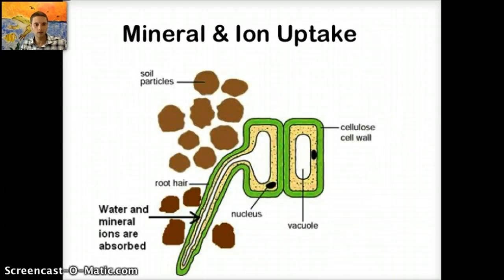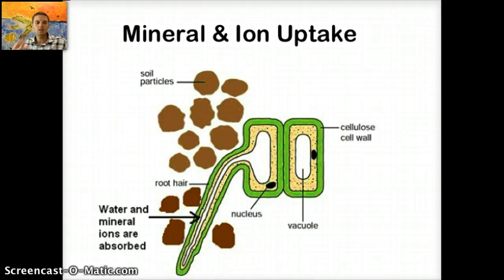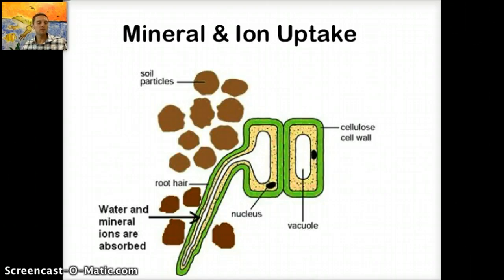Here we can see soil particles, a root hair, and individual cells. The concentration of minerals and ions within the root hair is actually higher than in the soil — it can often be 100 times greater inside the root tissue than in the soil. This is established by active transport, so the plant spends energy in the form of ATP to pump or move these ions inside. There are separate pumps for each different type of ion to control how much goes in or out. This also causes osmosis of water into the root, because with a high concentration of ions inside the root tissue, water moves from high concentration to low concentration.